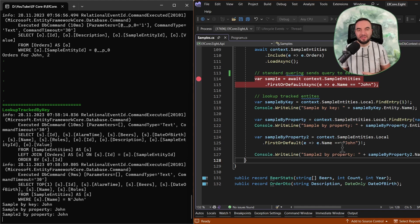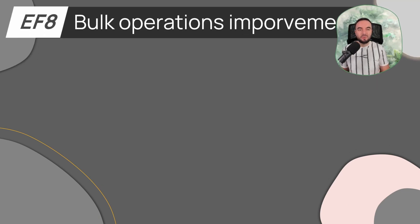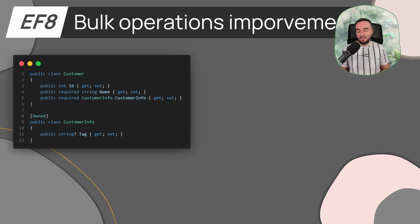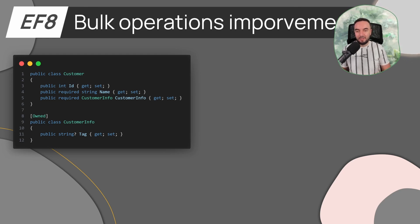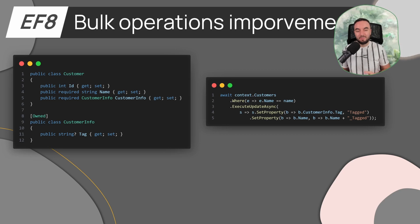There are also two small improvements I wanted to discuss. The first one is bulk operation improvements. Let's imagine that we have a customer entity which has an owned type of customer info with a tag property. Previously, whenever we had this kind of structure and wanted to update the customer info dot tag property using the bulk update feature from Entity Framework 7, this would throw an error. But right now we can use this approach and the tag property of the customer info owned type will be properly updated.